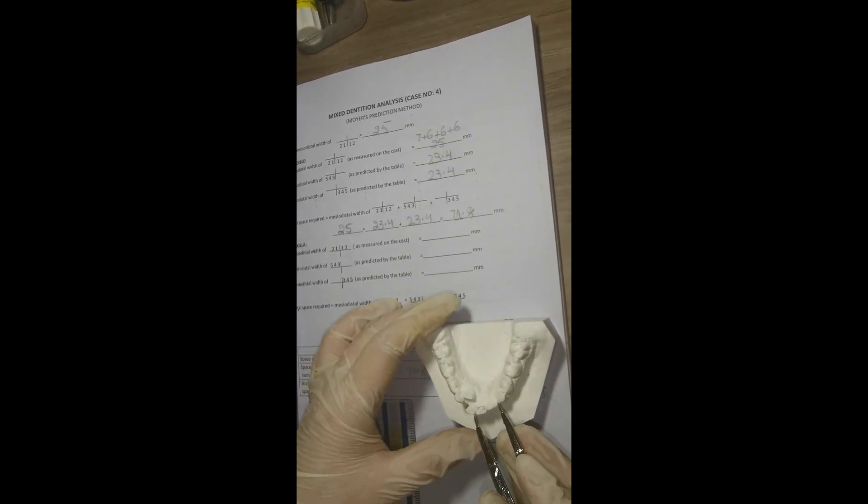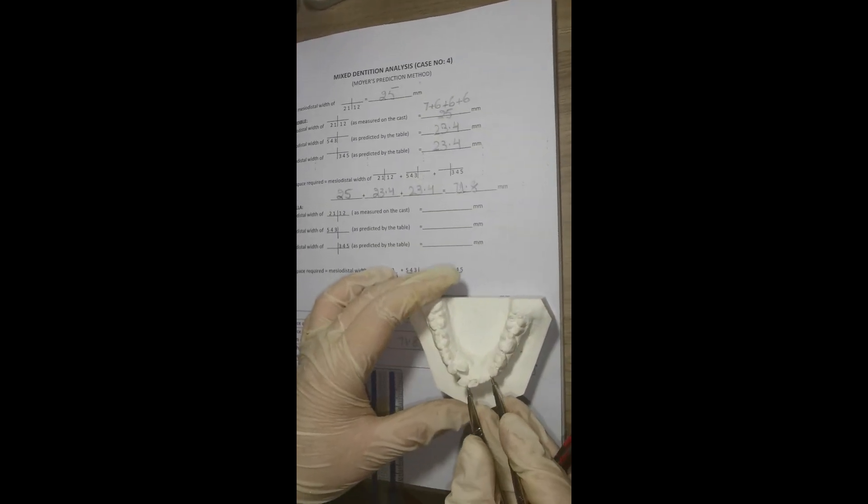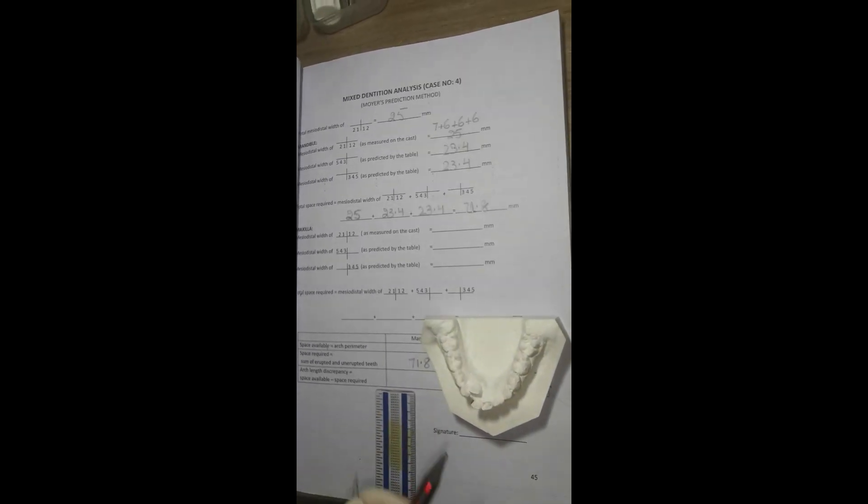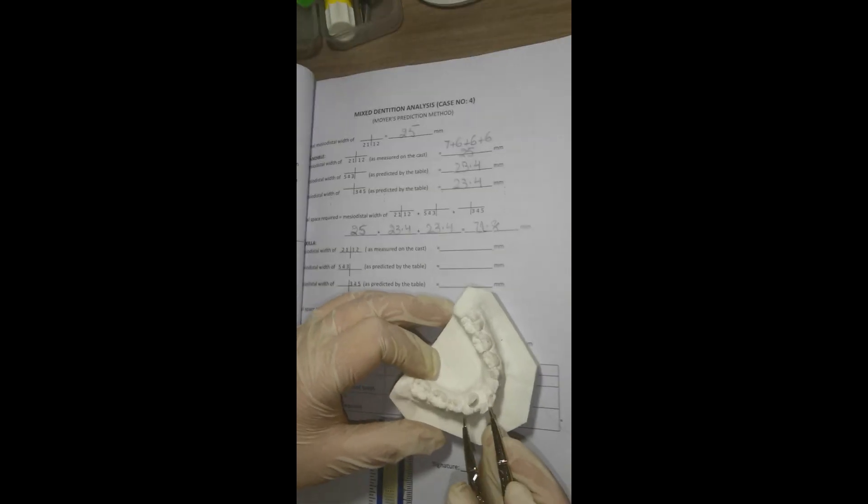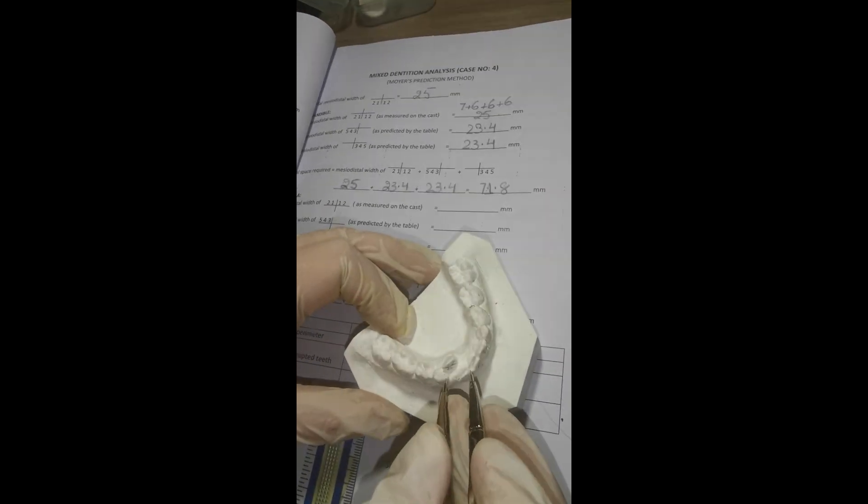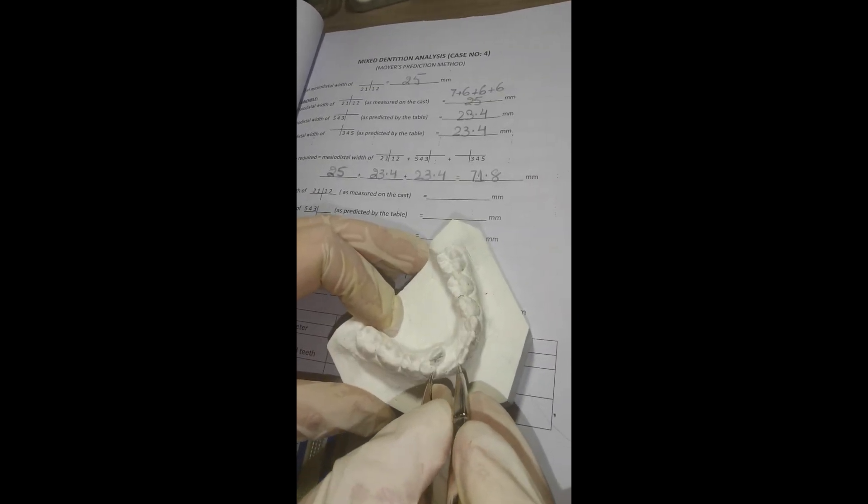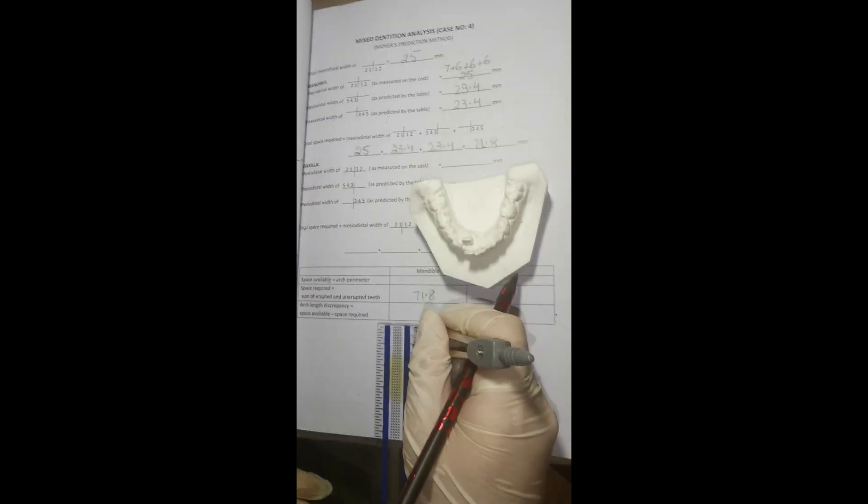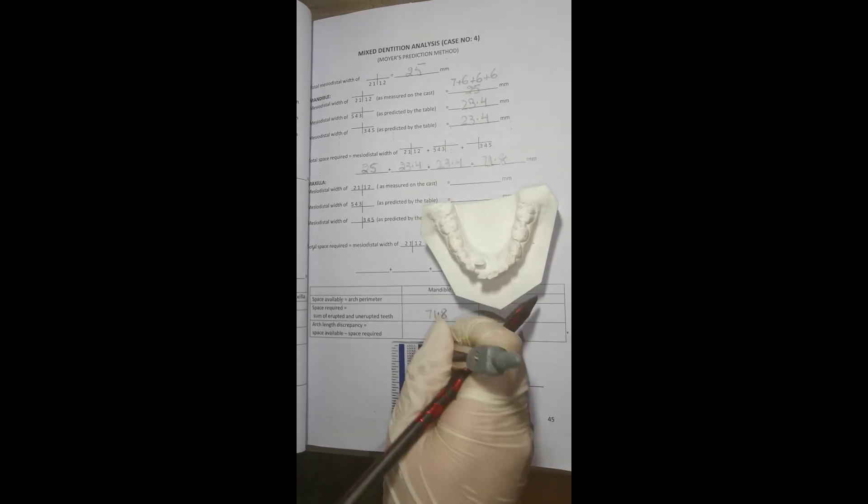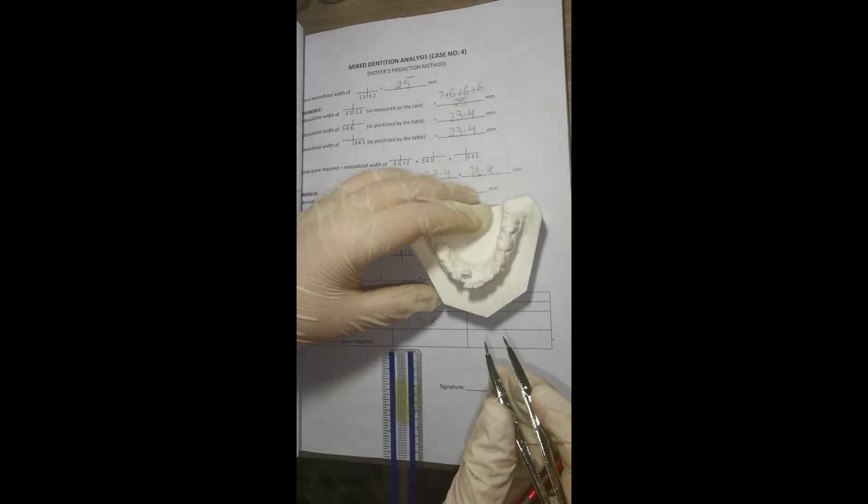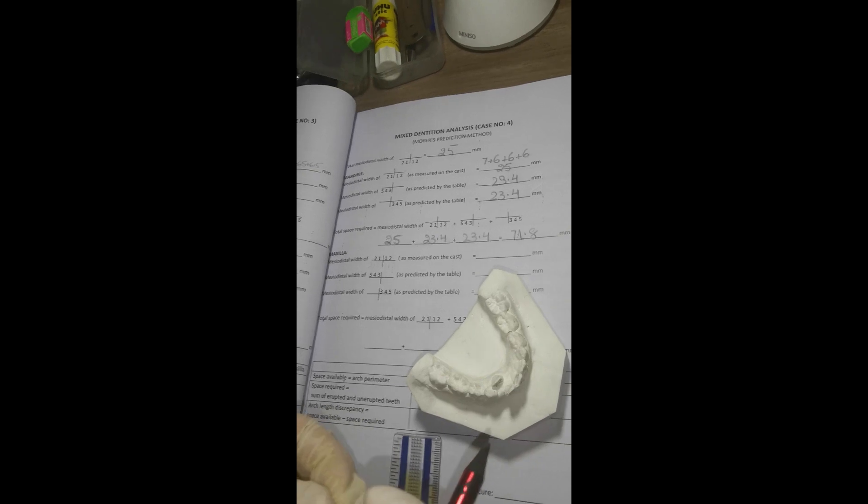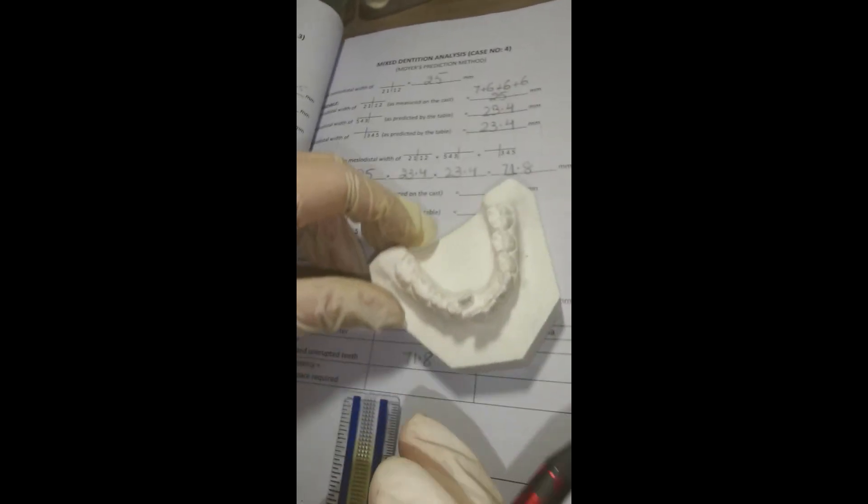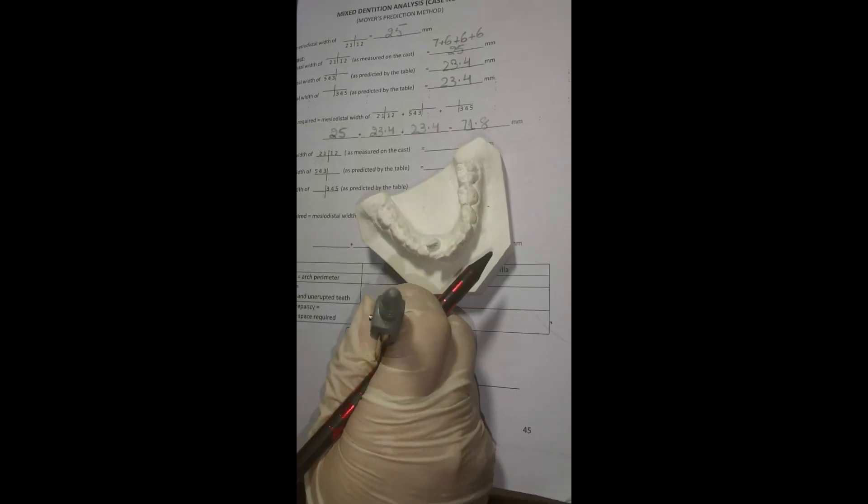Second segment is 10.5 mm. Remember to stay in the center of the arch. Don't go too lingual or too buccal, irrespective of tooth position. Third segment is 8.5 mm. And fourth segment is 24 mm.